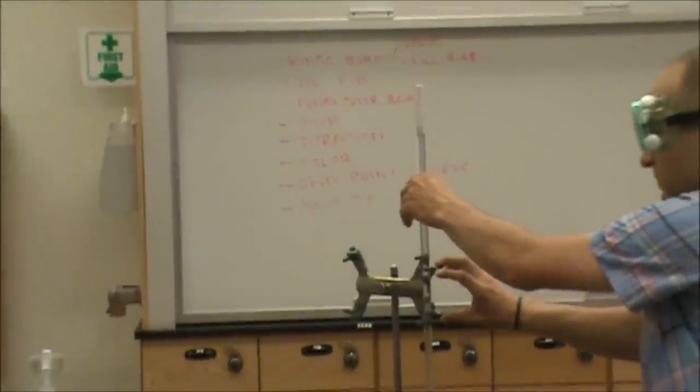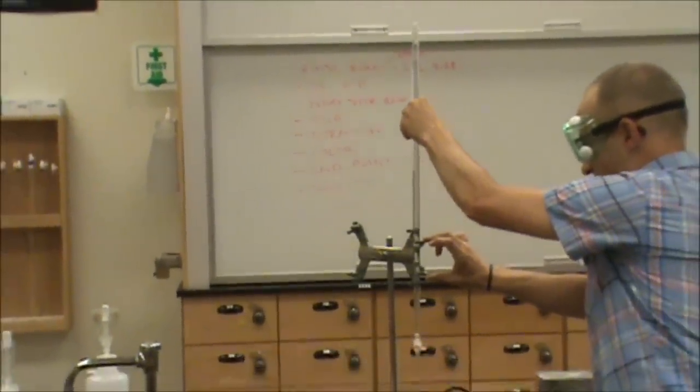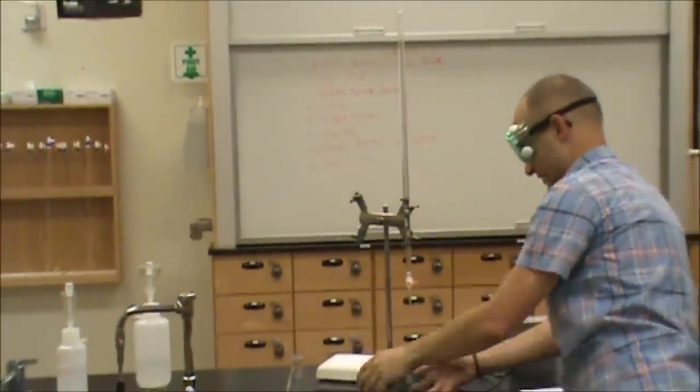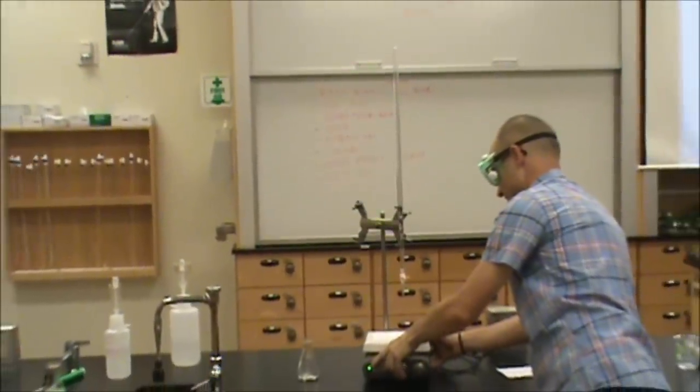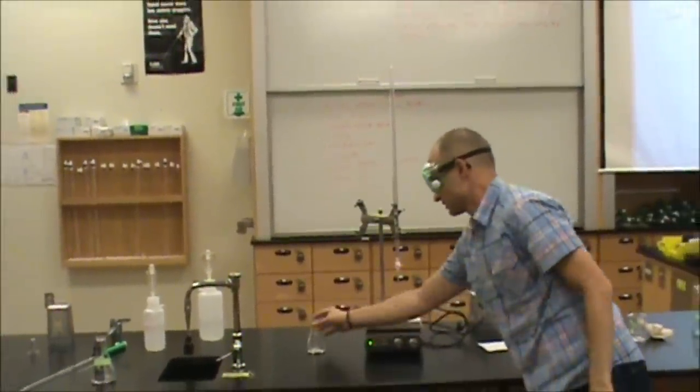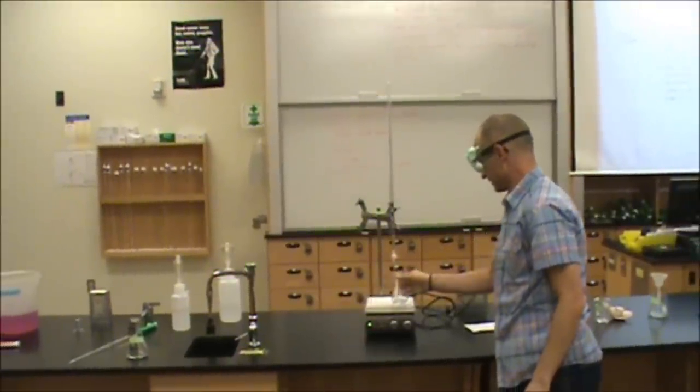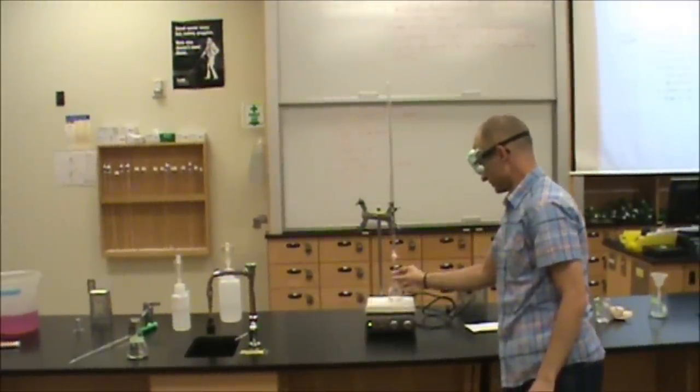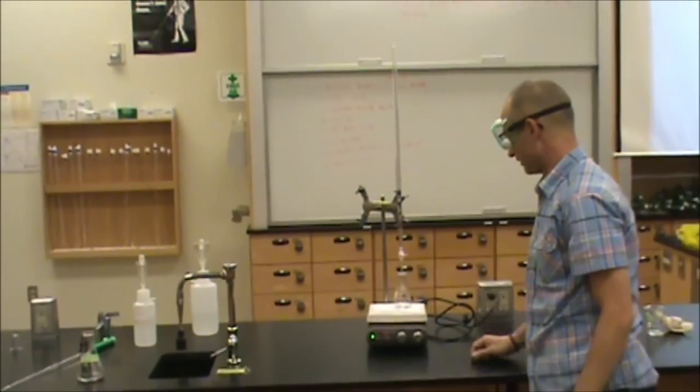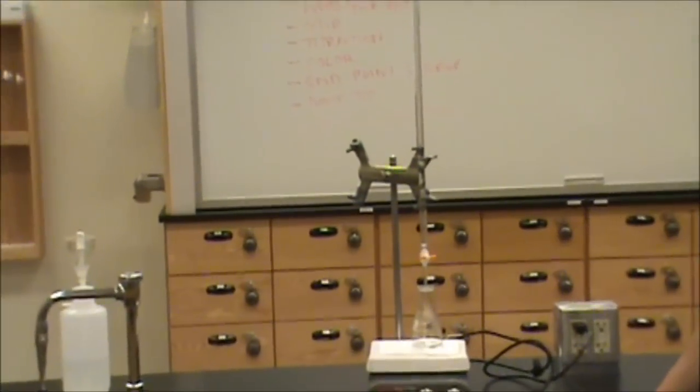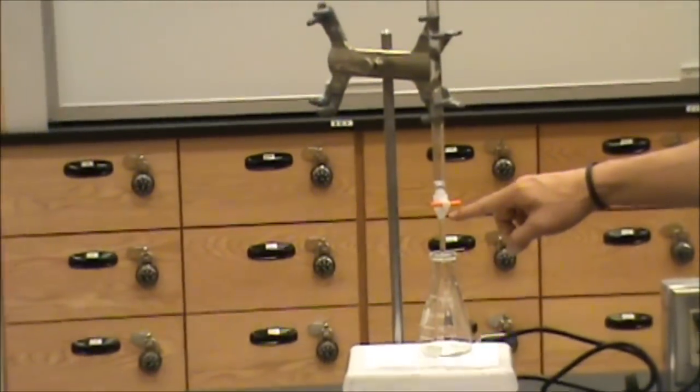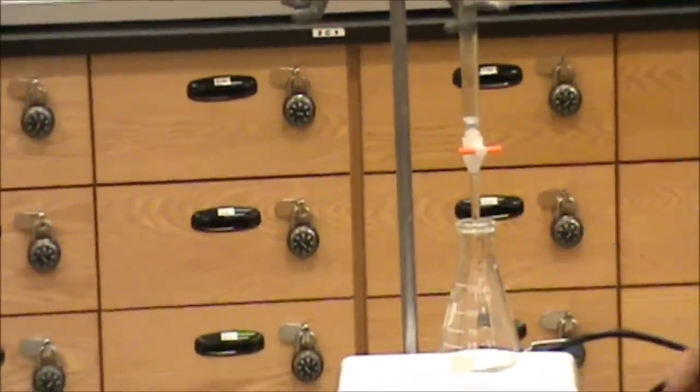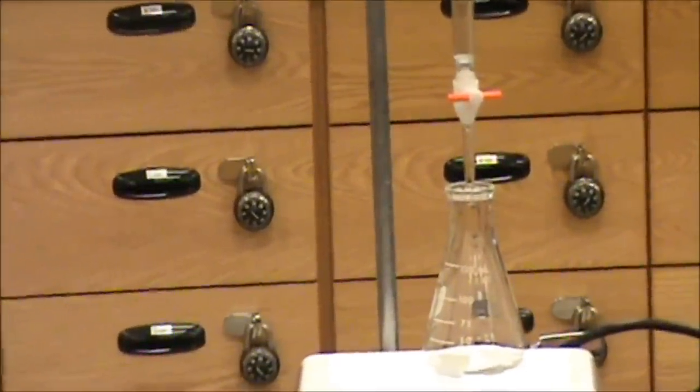With our initial volume recorded, I'm going to slide our burette back up, replace our magnetic stir plate, add our container of analyte. And I find it best if the tip of the burette is just below the lip of our container to help reduce the chance of spillage or splashing.